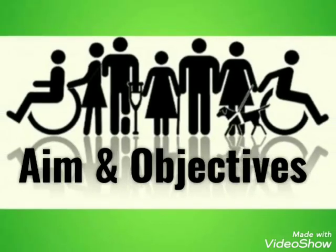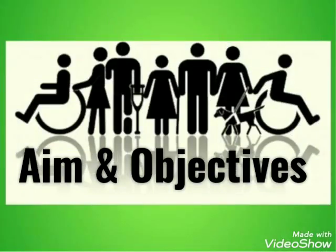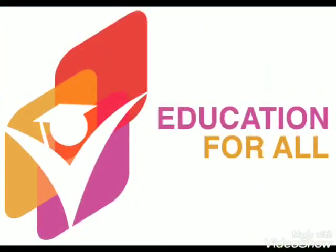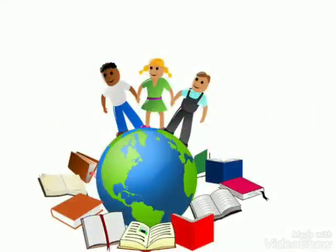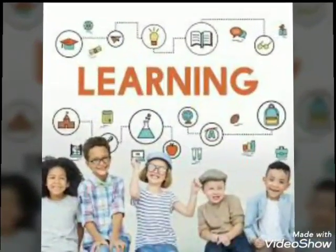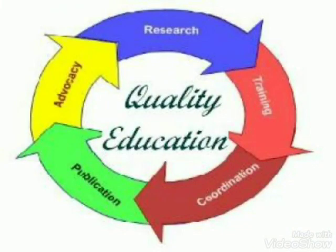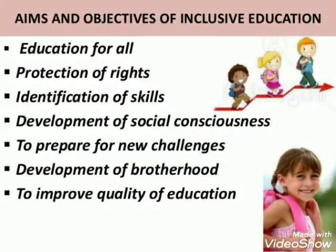Now let me point out some of the aims and objectives of inclusive education. Some of the aims and objectives are: education for all, protection of rights, identification of skills, development of social consciousness, to prepare for new challenges, development of brotherhood, and to improve quality of education. Thank you.